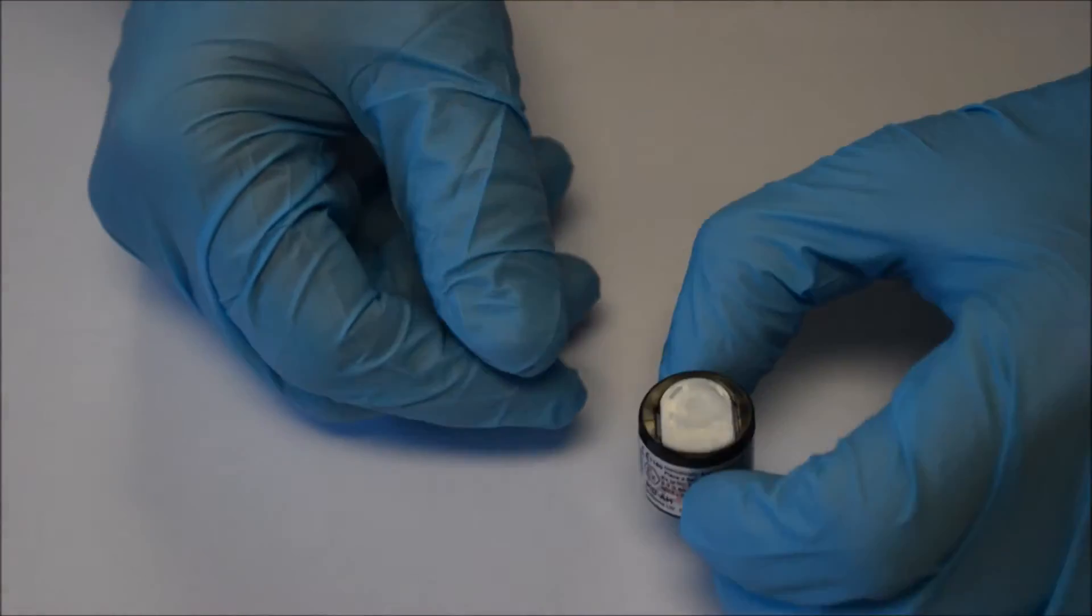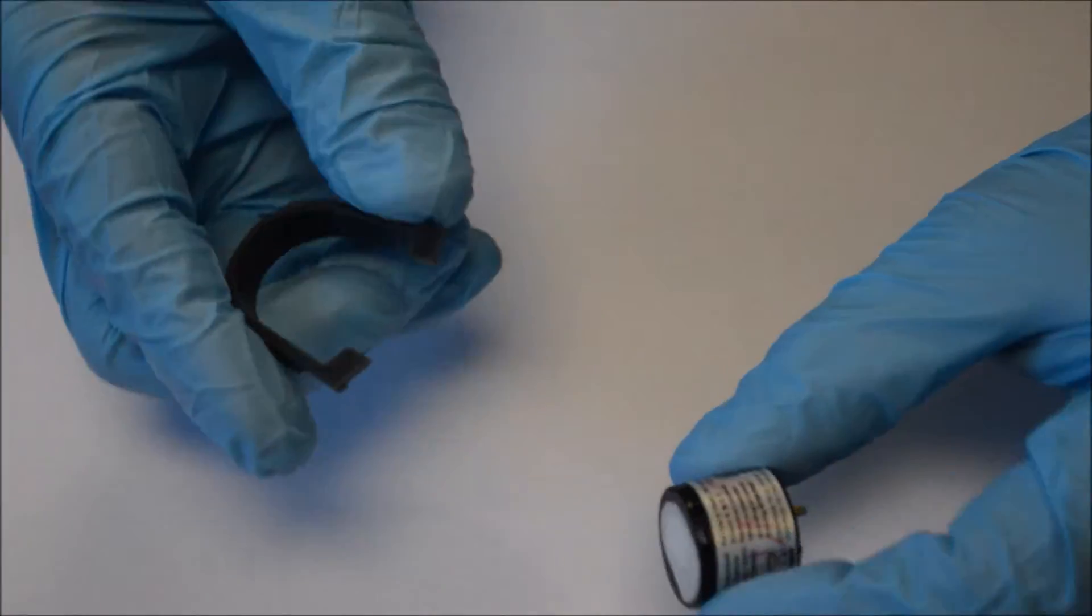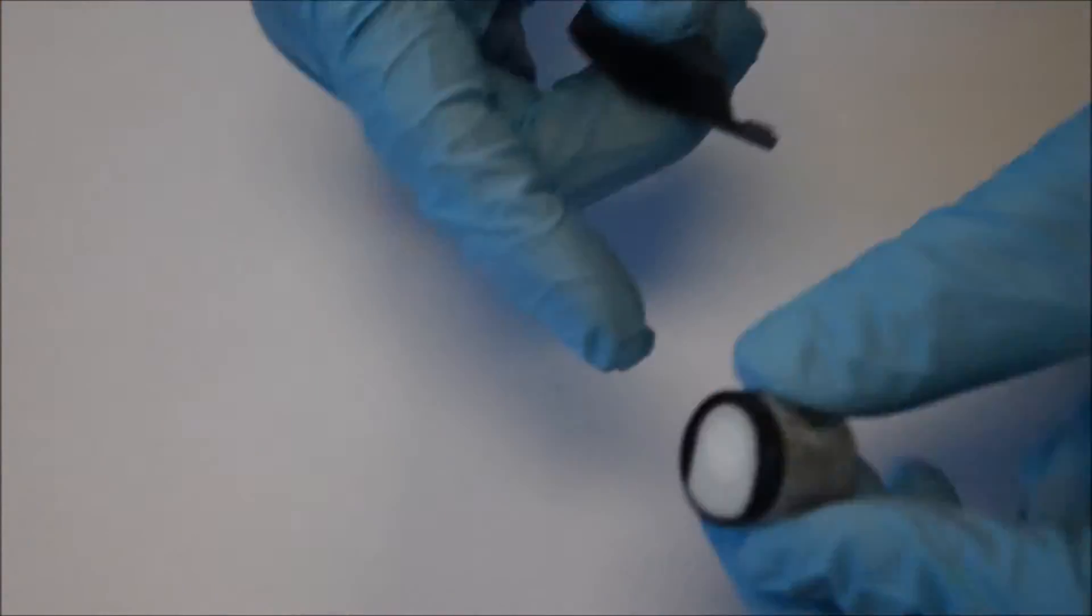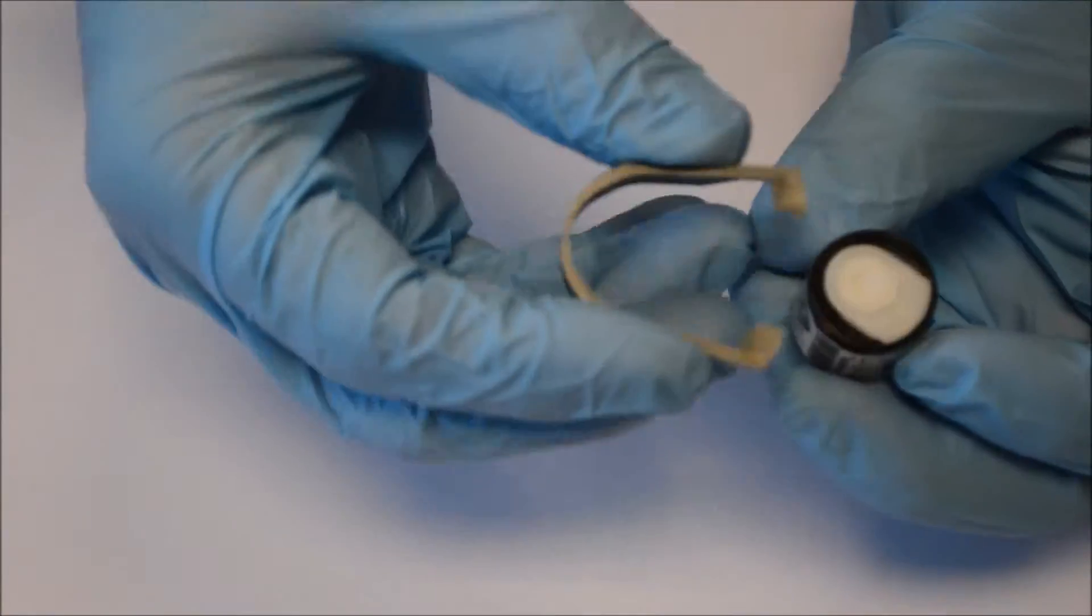First of all we need to remove the electrode stack which is this white section in the top of the cell. How we do that is if you notice there's a slot on either side which relates to the slots on the tool.